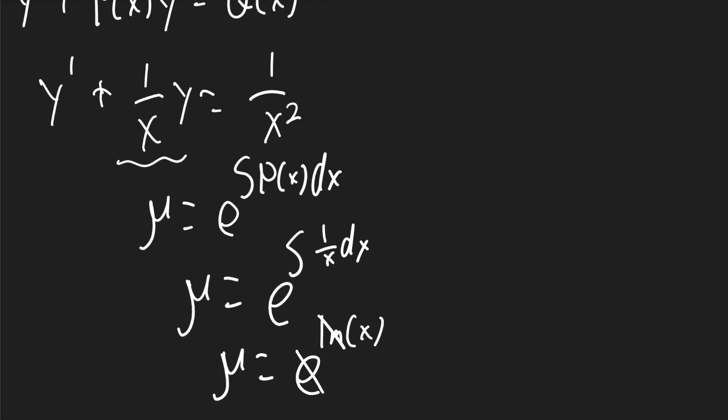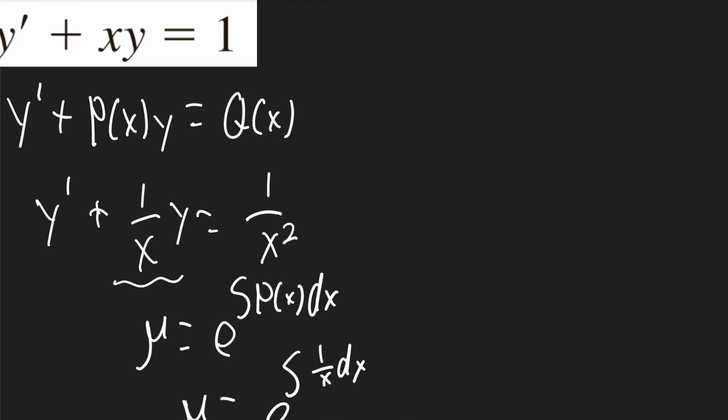Now we multiply mu to all the terms in the modified equation. So it'll be y prime times x plus y equals 1 over x.